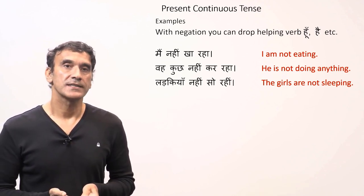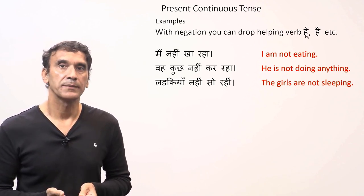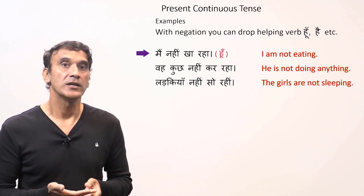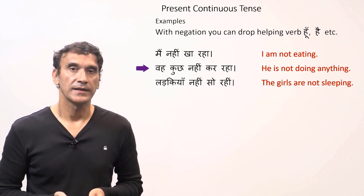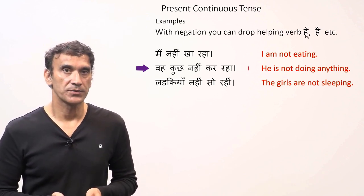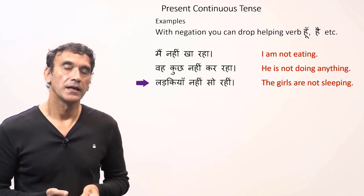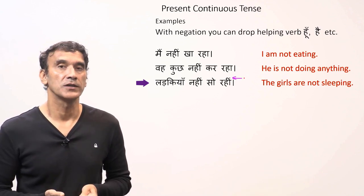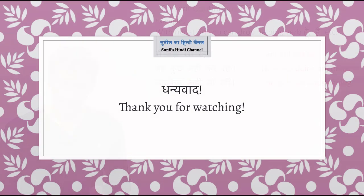Finally, just like in the present habitual tense, in negative sentences the helping verb can be dropped. If the present continuous sentence has a negation, the helping verb forms 'hun', 'hai', 'ho' can be dropped. For example: 'main nahin kha raha' — I'm not eating (hun is dropped); 'woh kuch nahin kar raha' — he's not doing anything (hai is dropped); 'ladkiyaan nahin so rahi' — the girls are not sleeping. In case of a feminine plural subject, the nasalization of the helping verb 'hain' is moved to the participle 'rahi'.